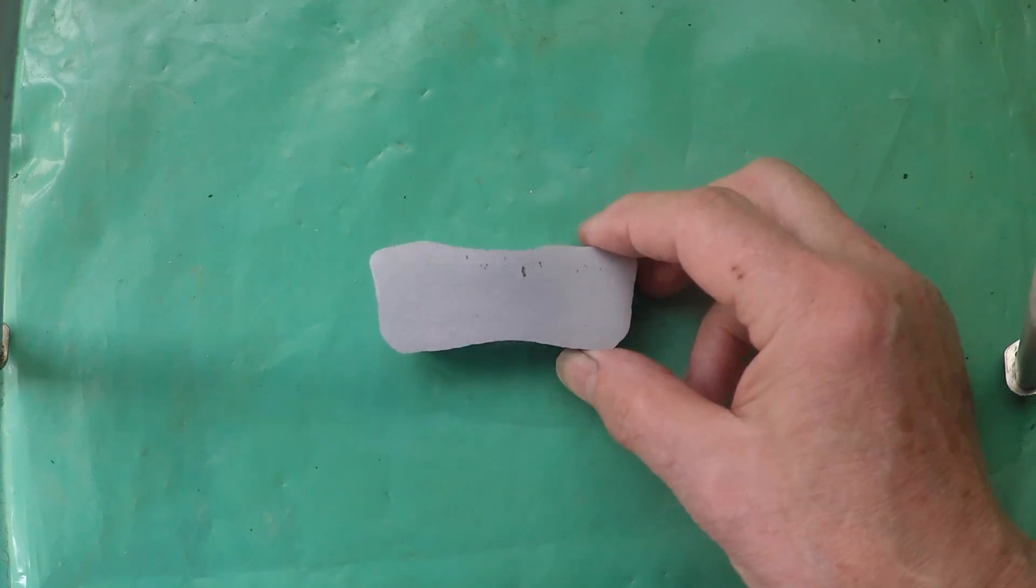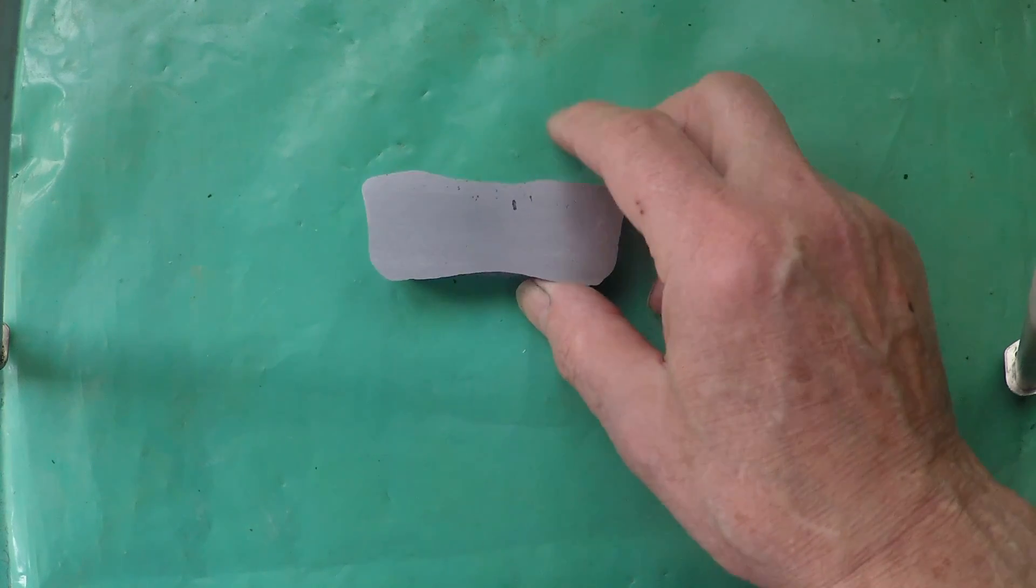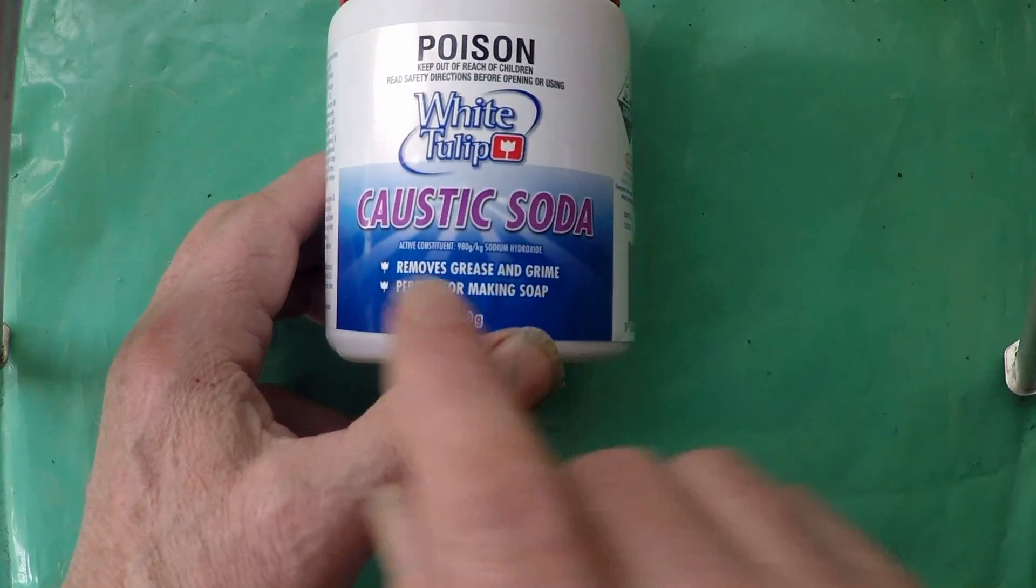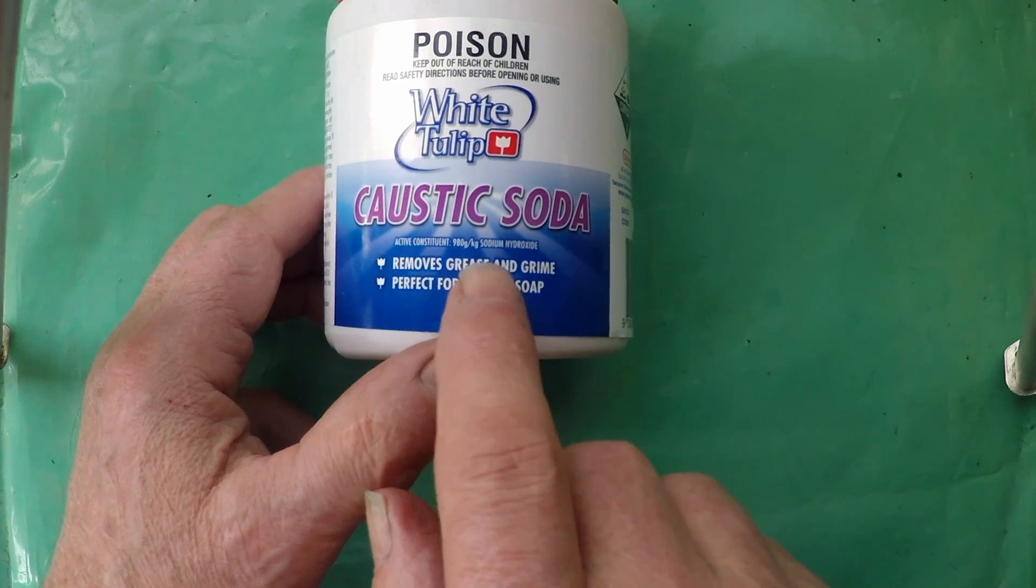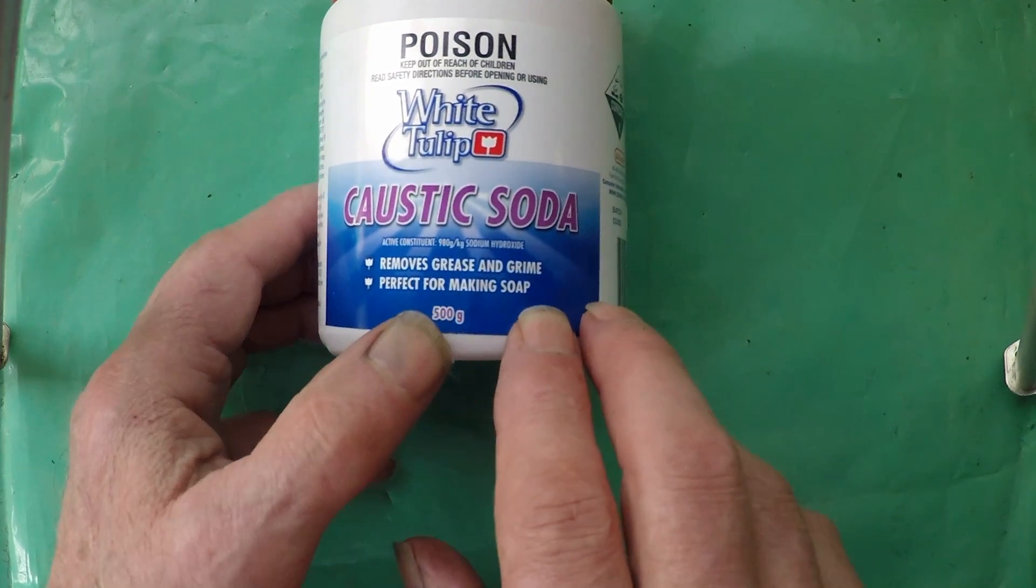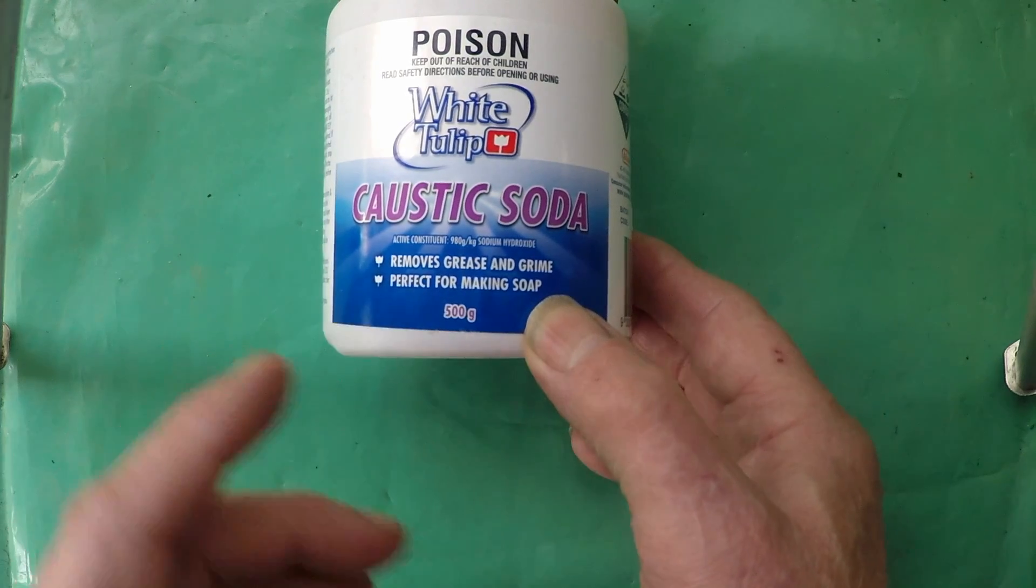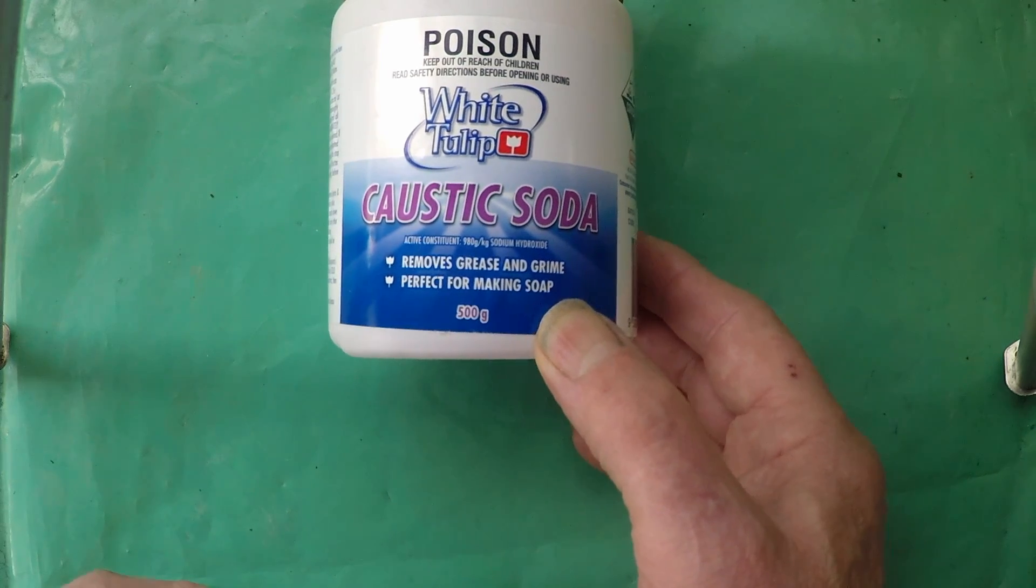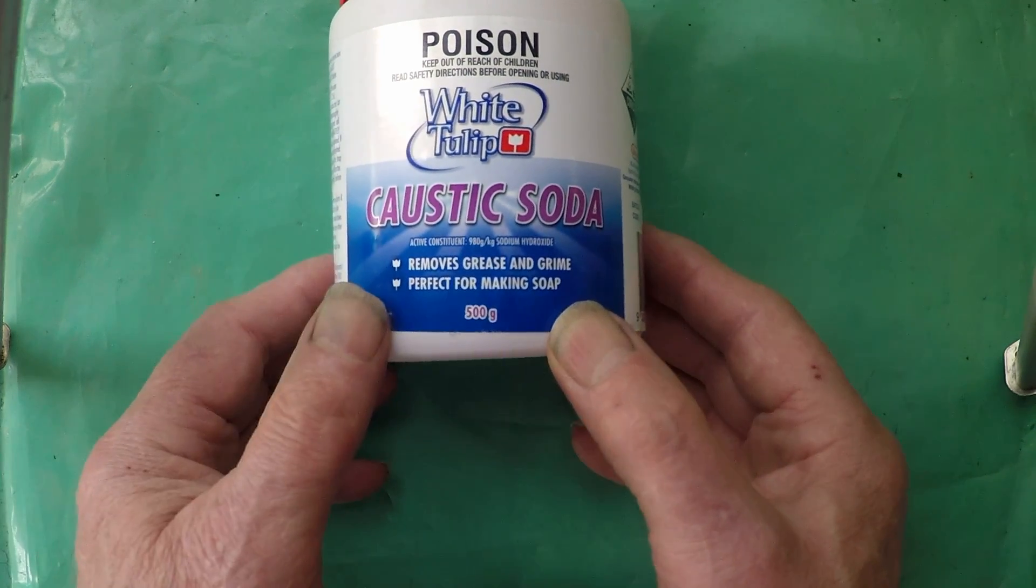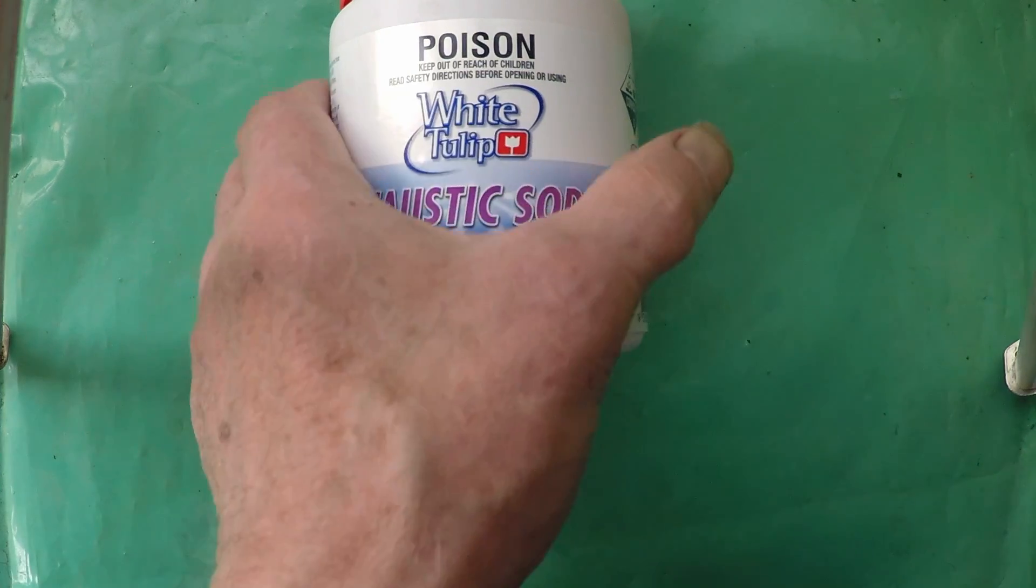Now that we've got our little slice sanded either side it's time to do a bit of caustic etching on it. Now first of all this is what I'm going to use a solution of caustic soda, active constituent 980 grams per kilogram of sodium hydroxide at 98 percent caustic soda. If you can't get pure caustic soda like this then the average drain cleaner will have a good deal of caustic soda in it, you just need to look at the label to work out how much and adjust things appropriately.